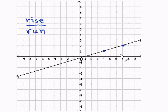Now, we must find the rise and the run between these two points. The rise is the vertical direction, and the run is the horizontal direction.